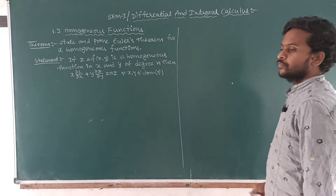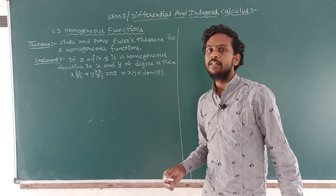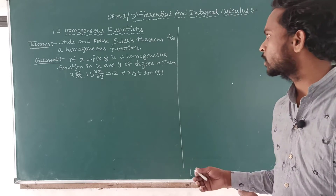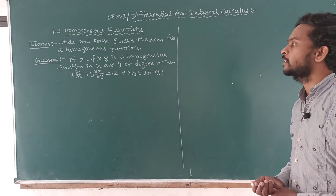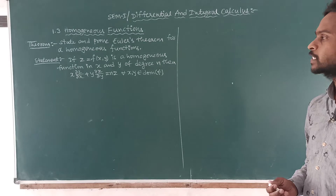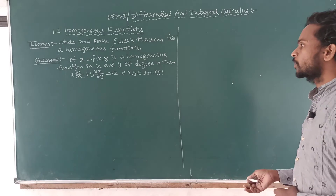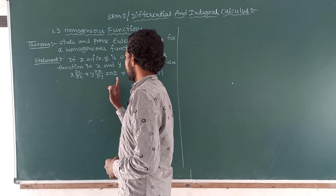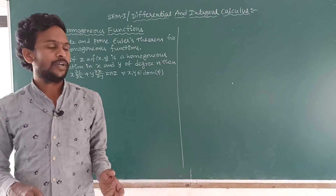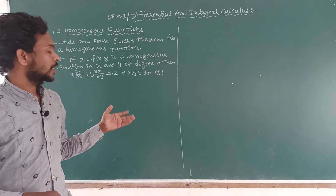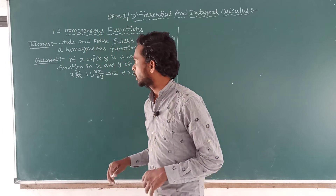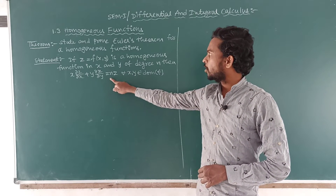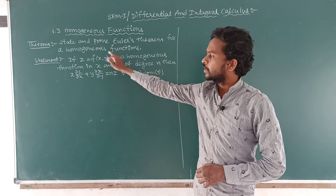The statement is: if z = f(x, y) is a homogeneous function in x and y of degree n, then x·∂z/∂x + y·∂z/∂y = nz, for all (x, y) belonging to the domain of f. Here n is the degree of the given function.